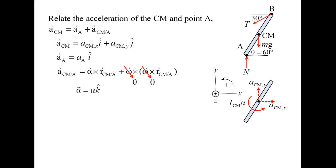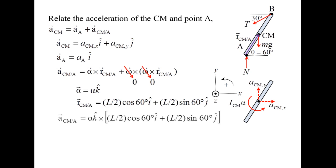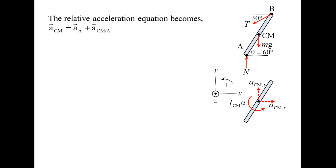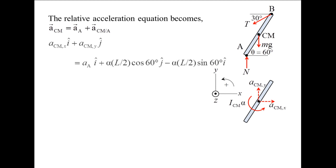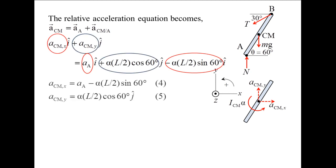The angular acceleration vector has magnitude alpha and points in the z-direction. R_CMA starts at point A and terminates at the center of mass. The center of mass is located a distance one-half L times cosine 60 degrees to the right and one-half L times sine 60 degrees upward from point A. Taking the cross product of alpha and R_CMA, and plugging in the expressions for the acceleration terms, equating the x-terms and the y-terms gives two additional equations. Now we have five equations and six unknowns.